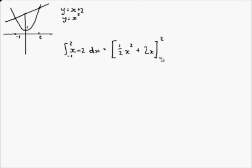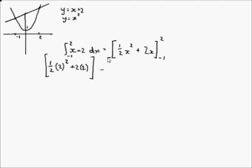Evaluated between upper limit of 2 and lower limit of minus 1. Now you substitute in 2 for the upper limit, keeping the square bracket. Then minus — substituting the lower limit — half of minus 1 squared plus 2 times minus 1.